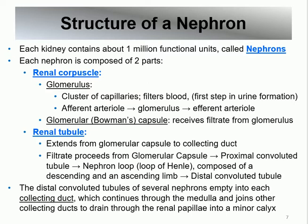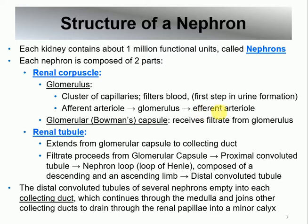There are about one million nephrons per kidney. The nephron is defined as the functional unit of the kidney. It consists of two parts: the renal corpuscle and the tubules. The renal corpuscle itself consists of two parts: the glomerulus — a cluster or tuft of capillaries where blood is filtered — and the glomerular (Bowman's) capsule surrounding it. Do not confuse the Bowman's capsule with the renal capsule, which surrounds the whole kidney.